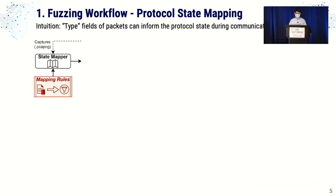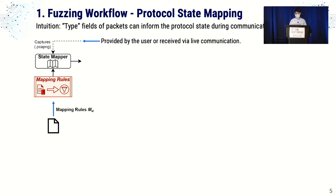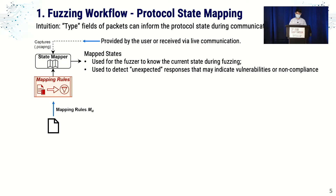Starting with the first component — the state mapper — it requires two inputs from the user: a reference capture and a mapper rules file. The mapper rules file describes how the state mapping should be created using the reference capture. The output, which we call mapper states, does two things: it informs the fuzzer of the current communication state, and it detects unexpected responses — for example, non-compliant responses that deviate from the standard in ways not present in the reference.